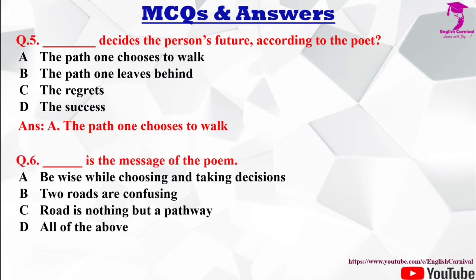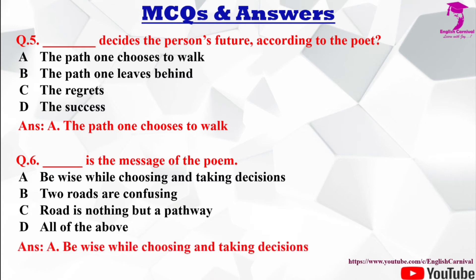Question number 6: ___ is the message of the poem. Options: A) Be wise while choosing and taking decisions, B) two roads are confusing, C) road is nothing but a pathway, D) all of the above. The correct answer is A — be wise while choosing and taking decisions.